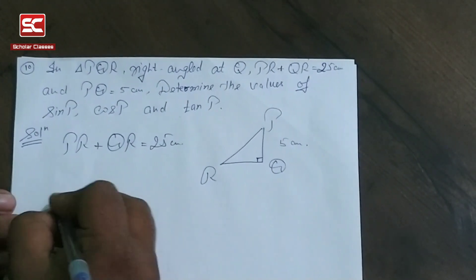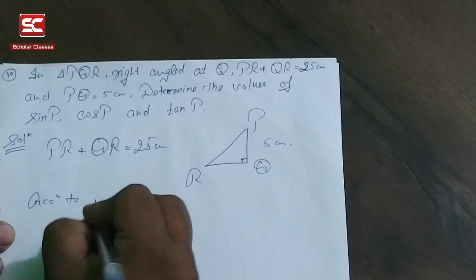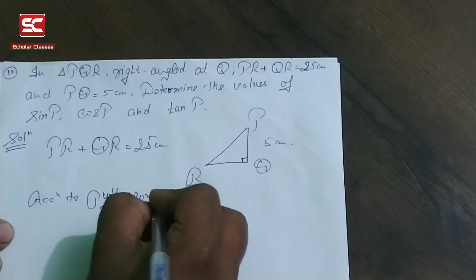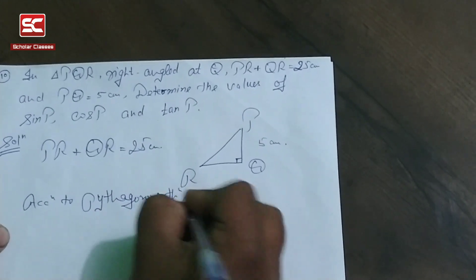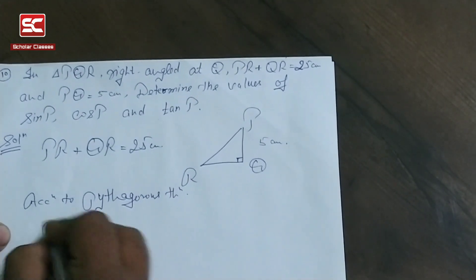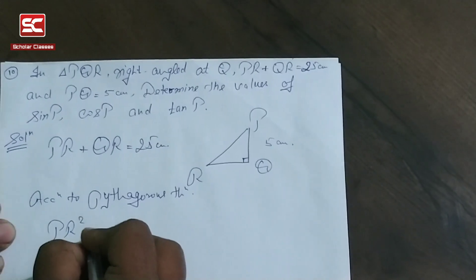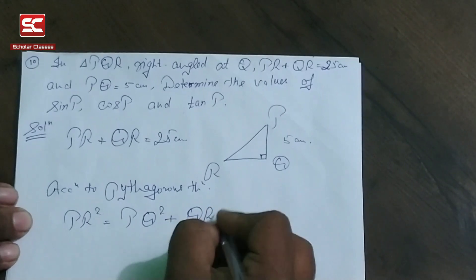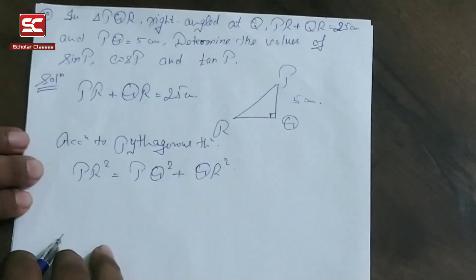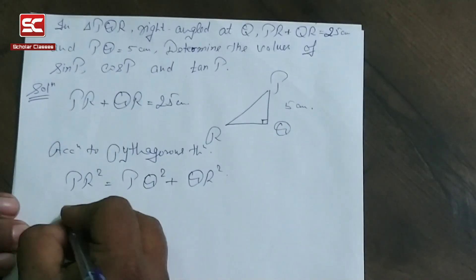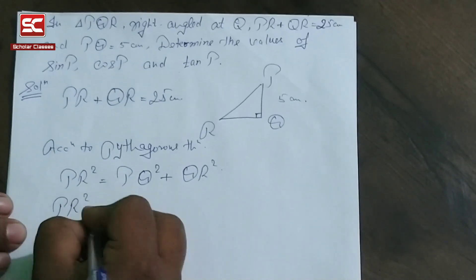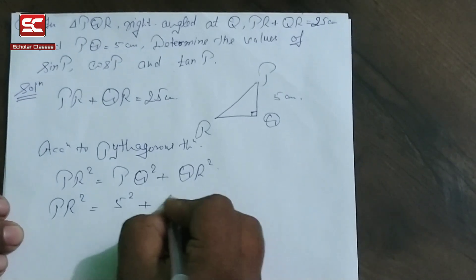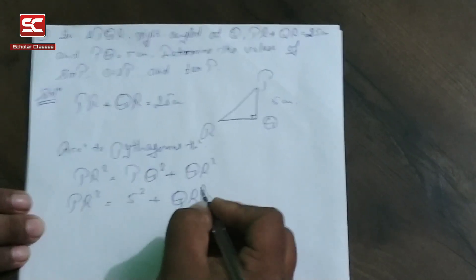According to Pythagoras theorem, PR square is equal to PQ square plus QR square. PR square is equal to 5 square plus QR square, since the value of PQ is 5.